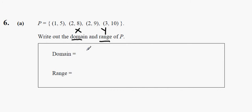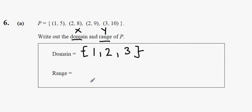So the domain is going to be, starting off with the smallest one, it's going to be 1. The next X value is 2, and then the final X value is 3. Domain is 1, 2 and 3. The range is the Y values: the first one is 5, the next is 8, then 9, and then 10.